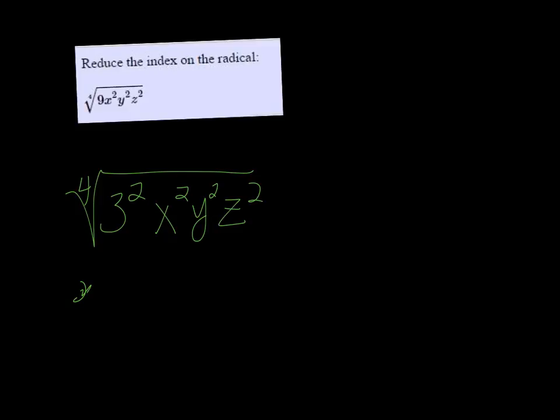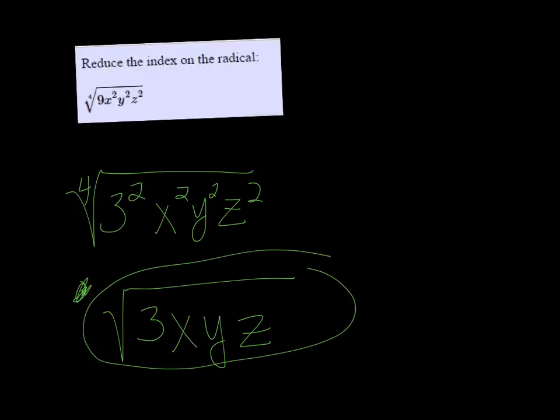Now you don't actually want to write a 2, so if it's the square root just put the radical sign and then divide the 2 by 2 and you just get 3, x to the first power, y to the first power, and z. So it's just the square root of 3xyz.